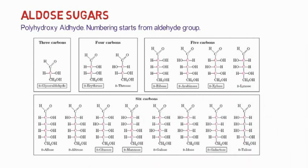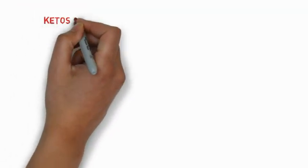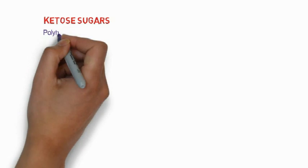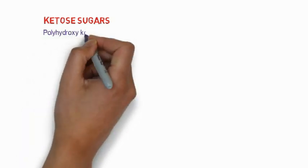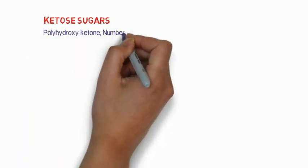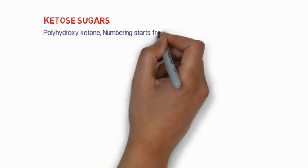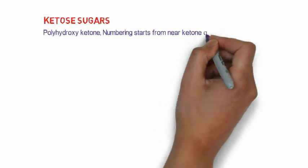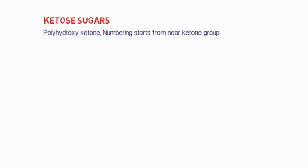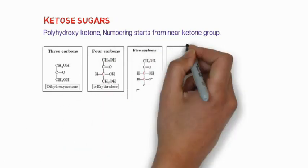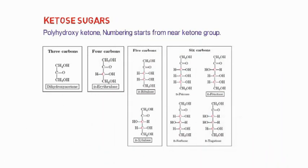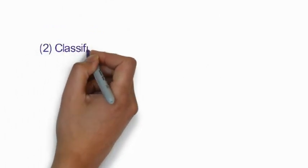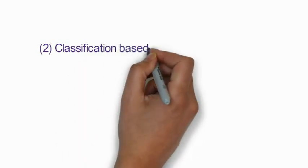The second class of monosaccharides is the keto sugars — called polyhydroxy ketones. In this case the numbering starts from the carbonyl carbon, which is usually carbon number two. You can see examples with three-carbon, four-carbon, five-carbon, and six-carbon ketose sugars.